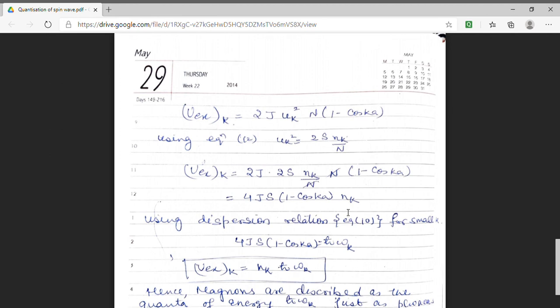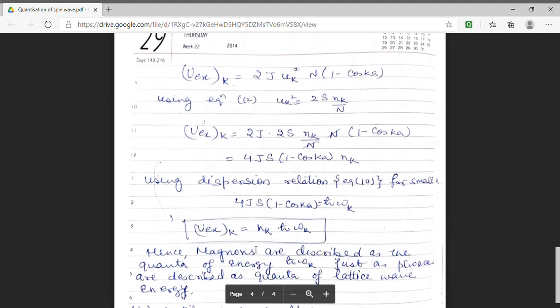And in our last lecture, we have derived the dispersion relation for magnons which was 4js 1 minus cos Ka equal to h cross omega k. Using this dispersion relation, I have my energy to be nk h cross omega k. This expression clearly shows that magnons are quanta of energy h cross omega k. And we are well familiar with the fact that phonons are quanta of lattice wave energy. Phonons are quanta of sound waves which also have energy which is quantized in terms of h cross omega.